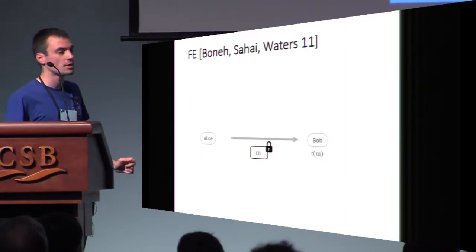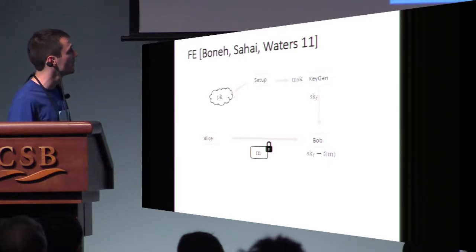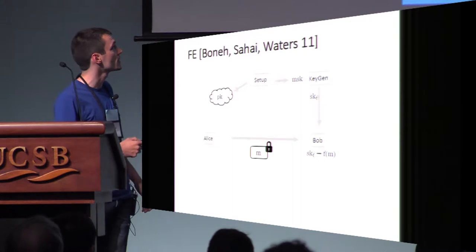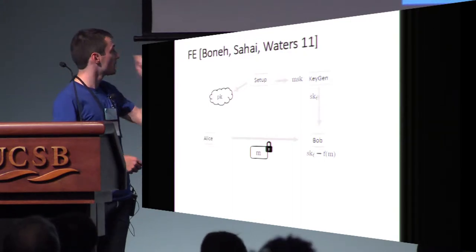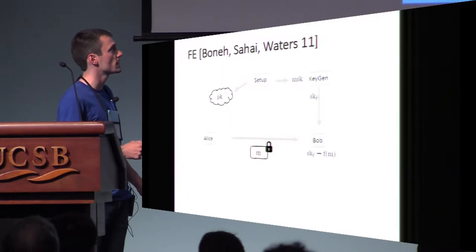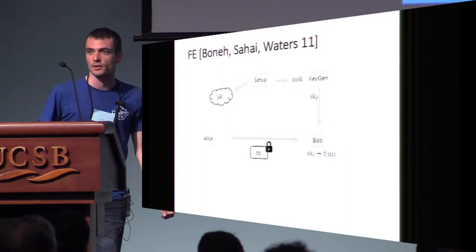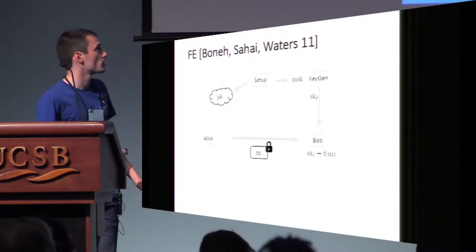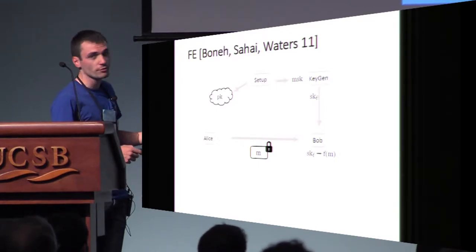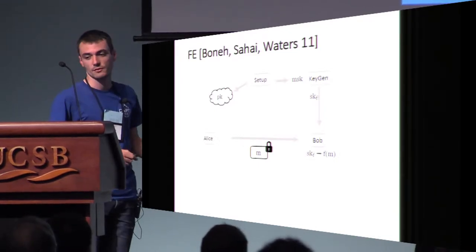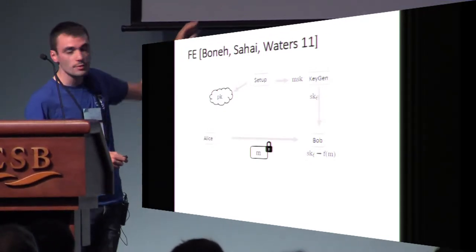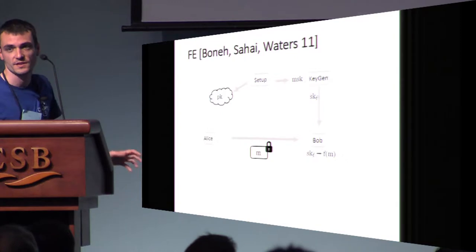This is what we want to achieve, and FE allows us to achieve that using a trusted setup that generates a public key, thanks to which Alice can encrypt the message M, and a master secret key that is used by a key generation algorithm that can produce different keys for different functions. So sk_f is a particular key for the particular function f, thanks to which Bob can extract from the encryption of M, f of M, and nothing more.